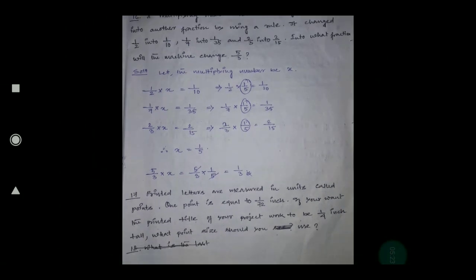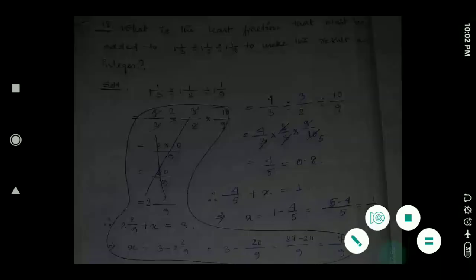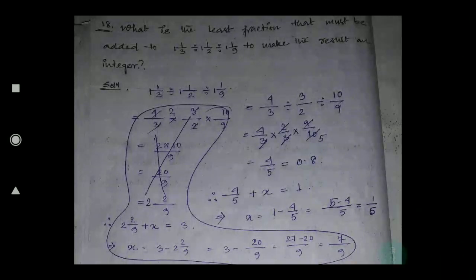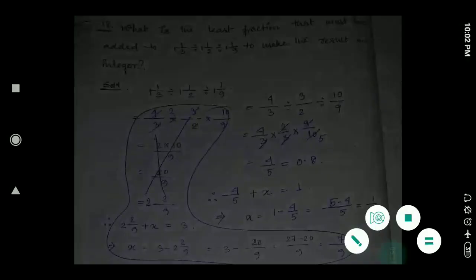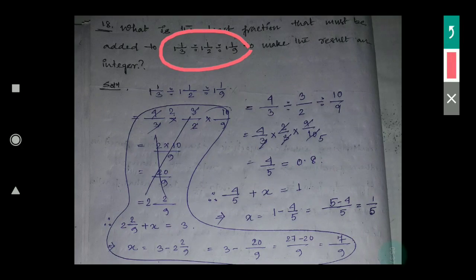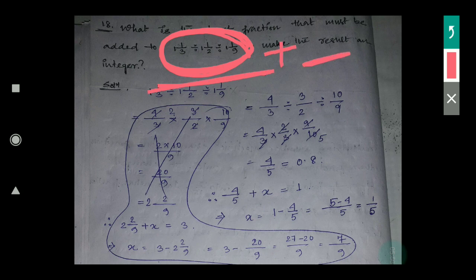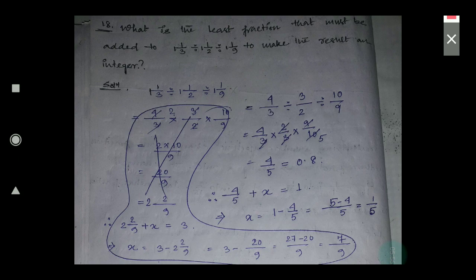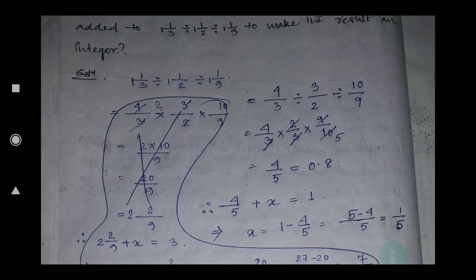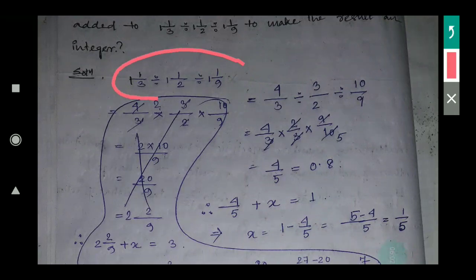Question 17 you have to do by yourself. Now question number 18: what is the least fraction that must be added to this simplification to make the result an integer? First you have to simplify this part, then find what must be added to that result to make it an integer.